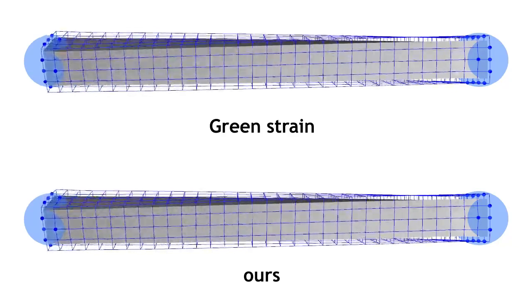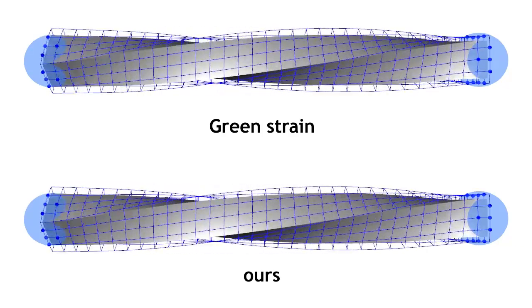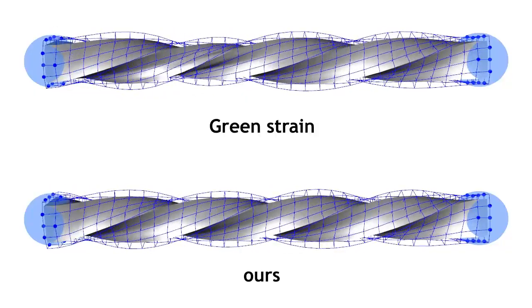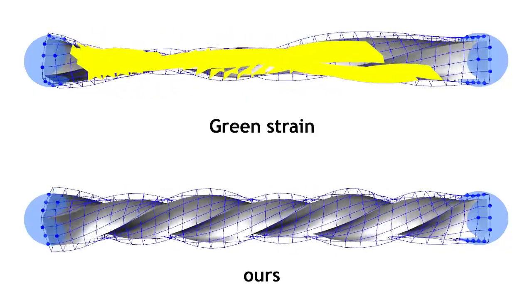Differently from previous approaches, our method can also be used to generate locally injective three-dimensional mappings, as shown in this example where the green strain energy is used to deform a 3D bar.